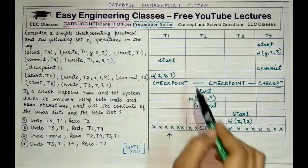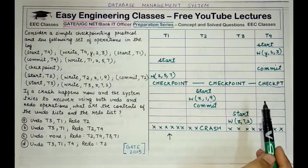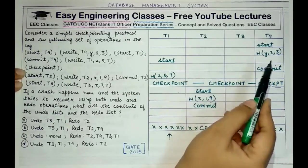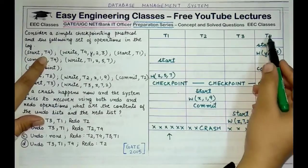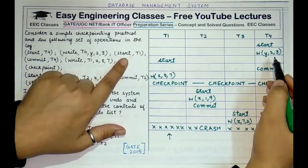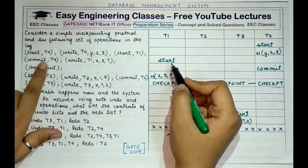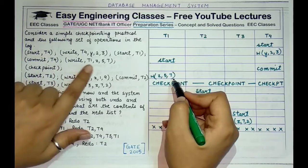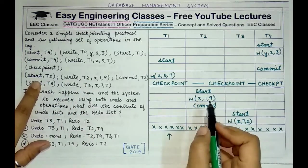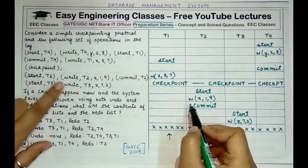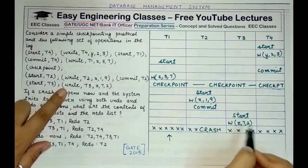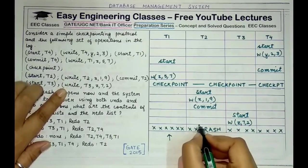I have made a table and written all these operations in tabular form. There are four transactions: T1, T2, T3, and T4, and I have put their operations sequentially as they happen. We start with start T4, then the write operation of T4, then T1 gets started, then we commit T4, and then the write operation of T1 takes place. After these five operations, a checkpoint occurs, and after the checkpoint certain more operations happen: T2 starts, writes the value of variable X, then commits, and after that T3 starts and performs its write operation. After all these operations, a crash happens.